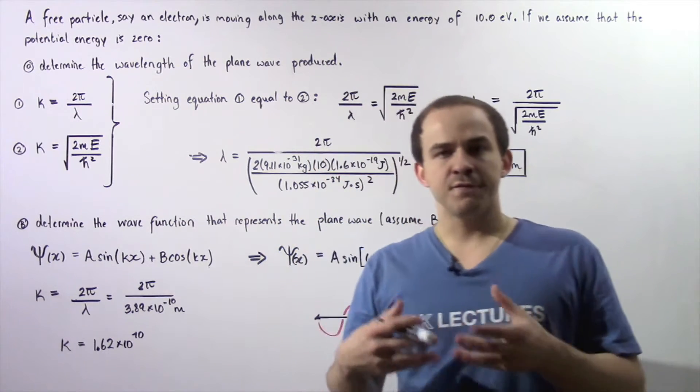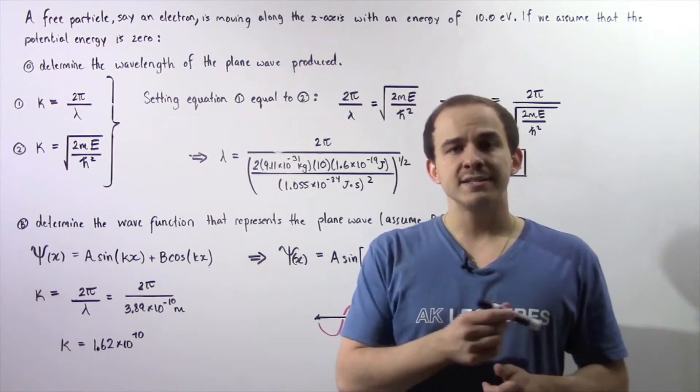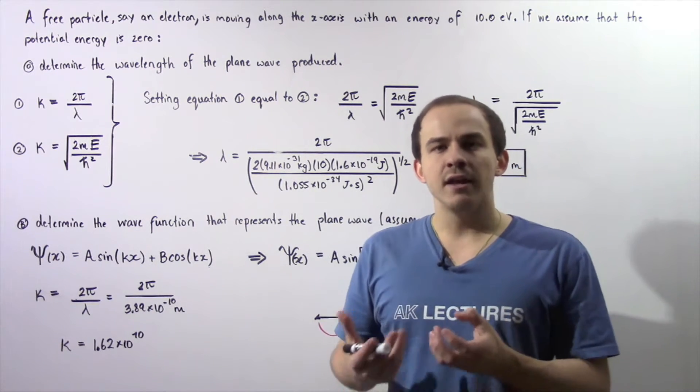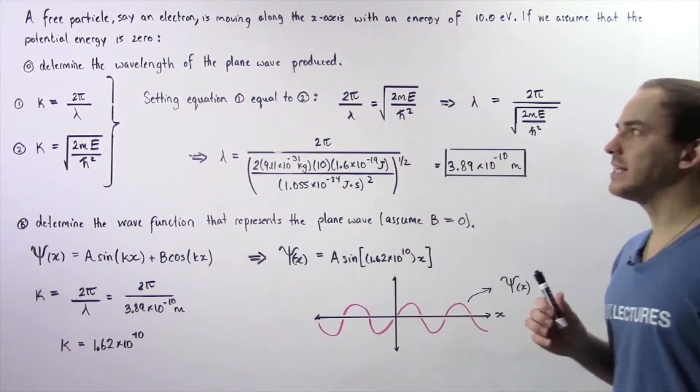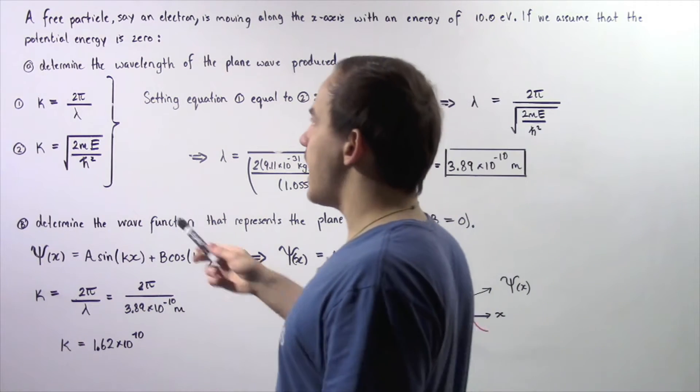Let's suppose a free particle, say an electron, is moving along the x-axis in the positive direction with a total energy of 10 electron volts. If we make the assumption that the potential energy of our free particle is zero, in part a,